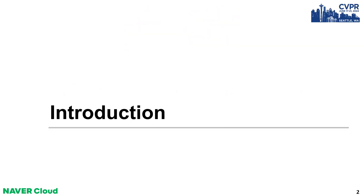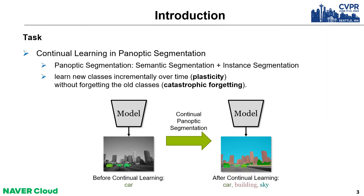The first is the introduction section. Let me explain the task definition of continual panoptic segmentation. Panoptic segmentation is a cutting-edge computer vision task that combines semantic and instance segmentation. Continual learning in panoptic segmentation aims to learn new classes incrementally over time, without forgetting the old classes, as illustrated in the figure.